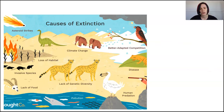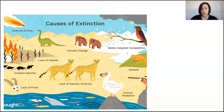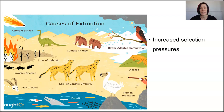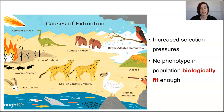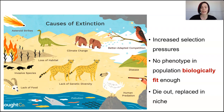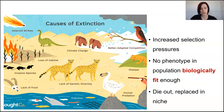Extinctions occur through a number of natural ways. It might be competition between species, or changes in the abiotic factors within an environment, particularly as climate change occurs. Essentially, the selection pressure becomes so great that there's no phenotype in the population that is biologically fit enough to survive. They eventually die out, opening up a space in the habitat that can be replaced by another organism in that niche that can actually adapt to the change.